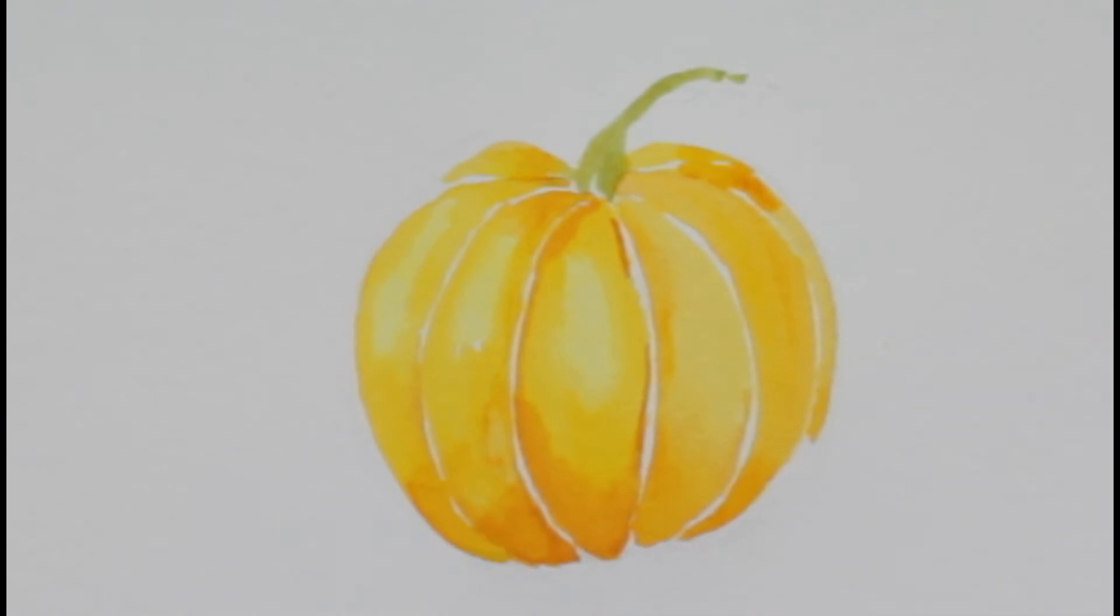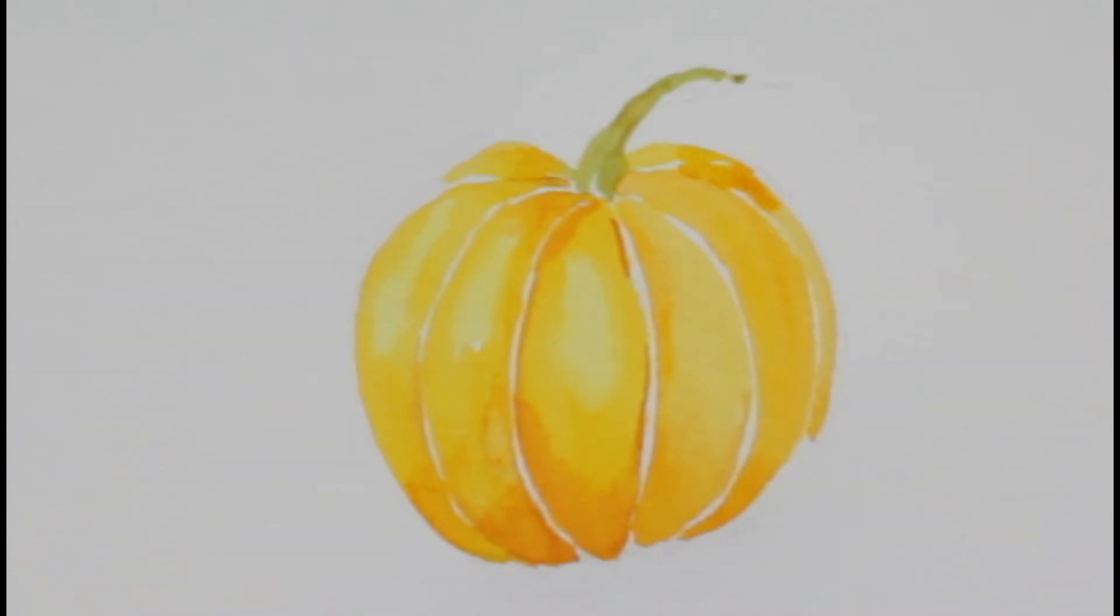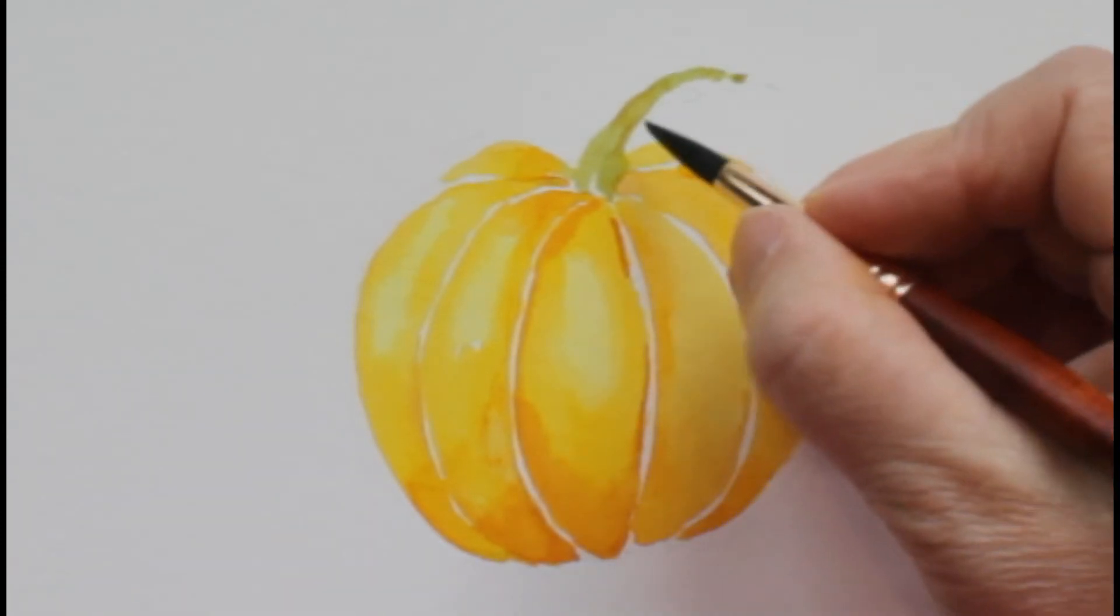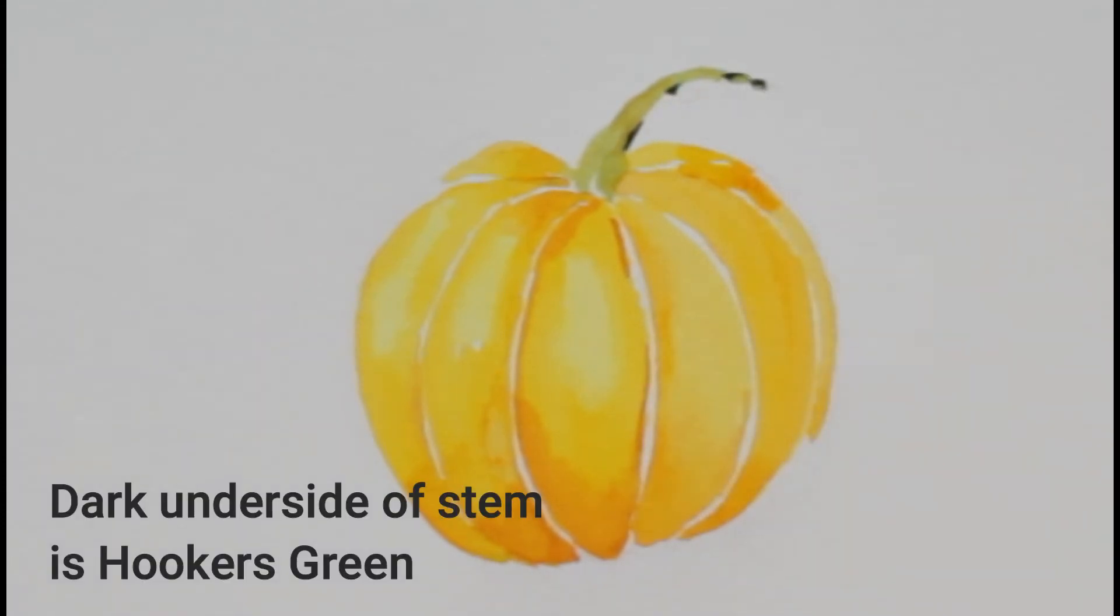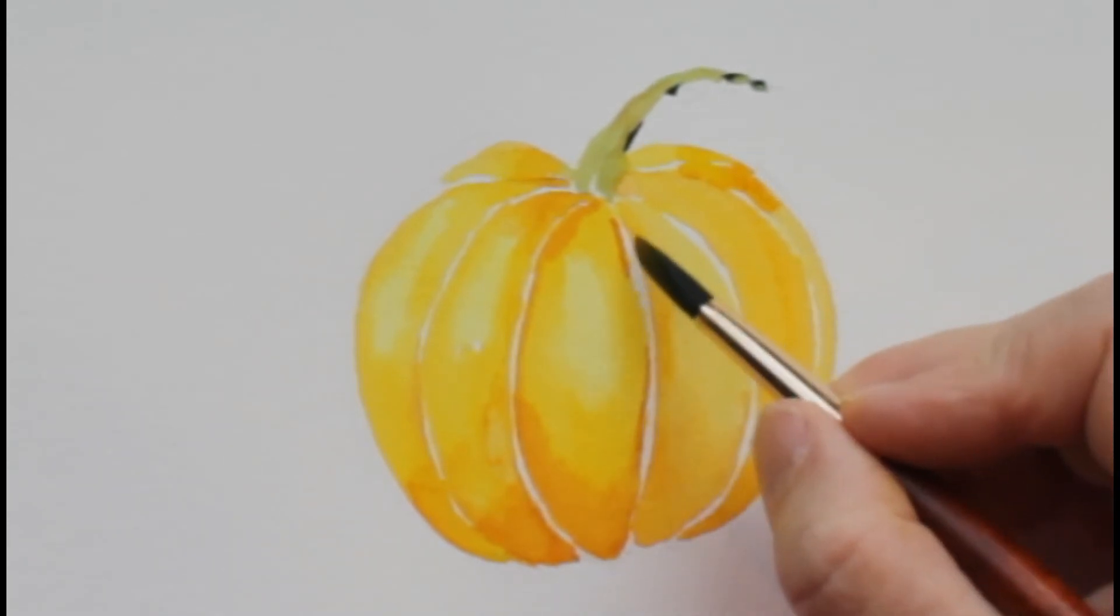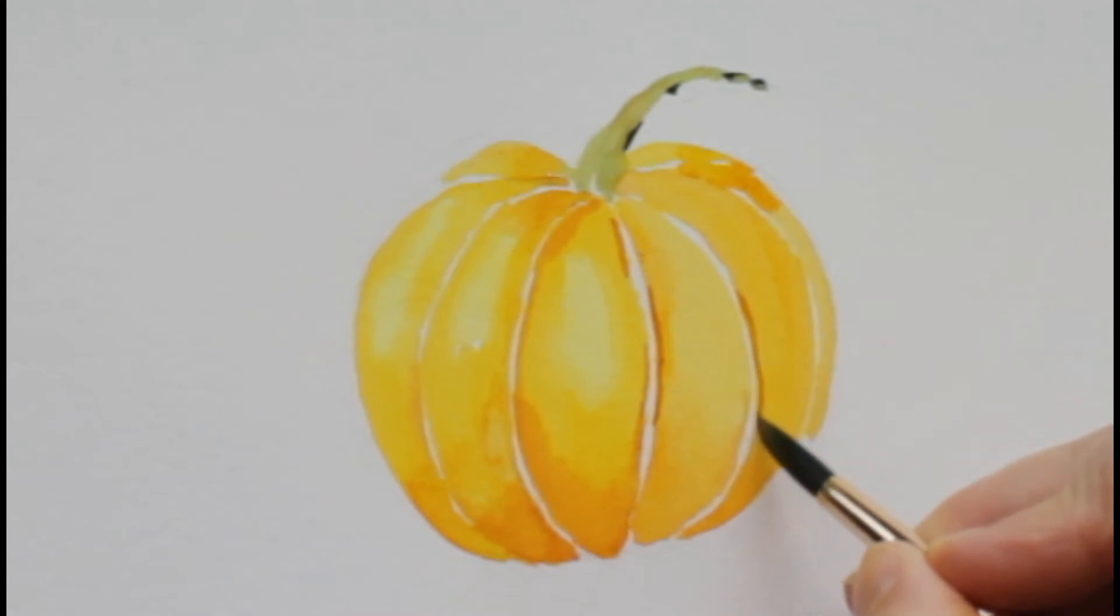I don't want the stem and the pumpkin to look like separate pieces. It's all one thing, and putting it together while it's still a little wet helps it to be more naturally colored. Right now you see a really dark color. You're probably thinking wow, why is she putting that super dark color there on the stem? But we'll fix that a little bit later.